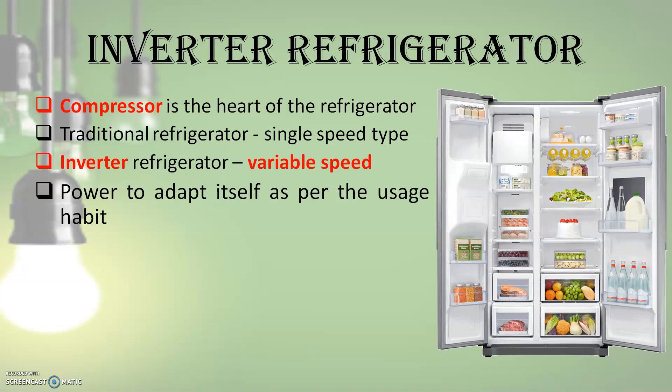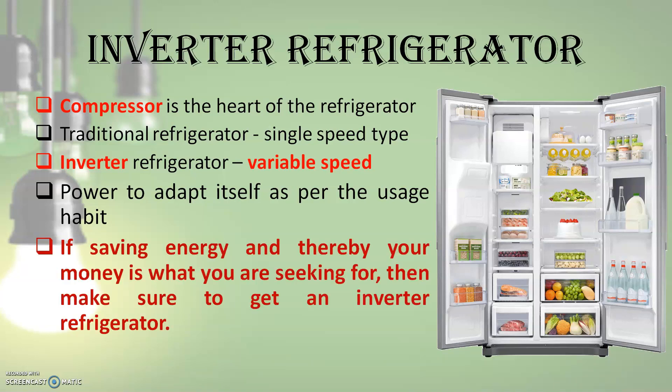At night, when there is little or no activity with the refrigerator, the compressor runs slow. It uses just the right amount of energy required to maintain the refrigerator temperature. This is where energy efficiency comes into play — it saves around 20 to 30 percent of your electricity bill. Hence, if saving energy and money is what you are seeking, make sure you get an inverter refrigerator.